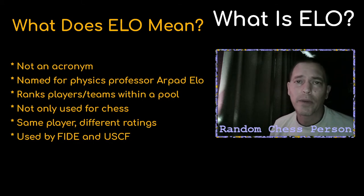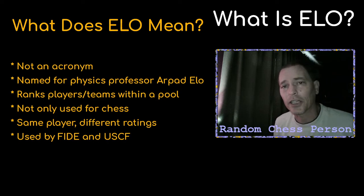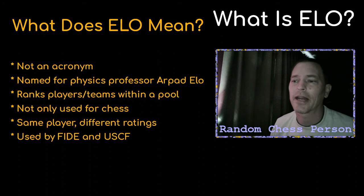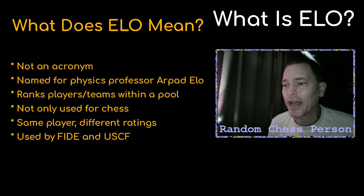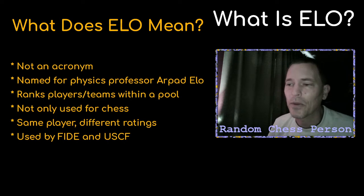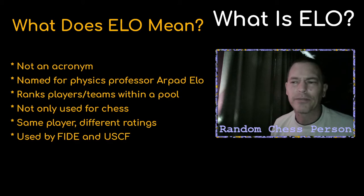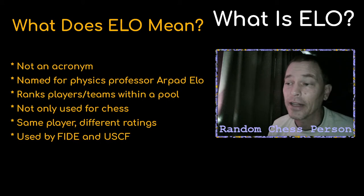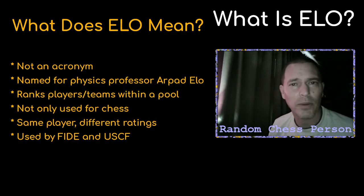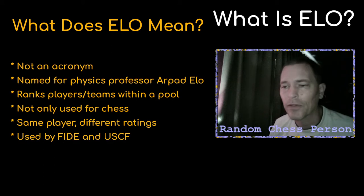Your ELO rating is only relevant to the particular organization in which you have that rating. That's why you can be, say, 1653 in FIDE but 1720 in the US Chess Federation, or whatever your country's Chess Federation is called. I believe FIDE actually still uses the ELO system, whereas the Chess Federation in the United States — and probably Australia and maybe others — have improved or changed their formula over the years.